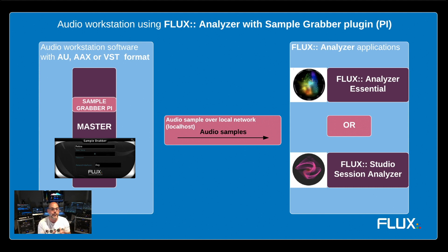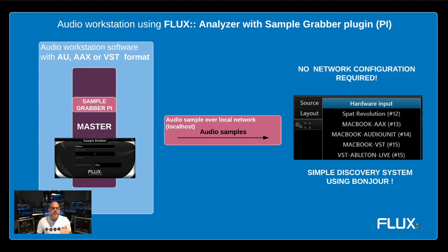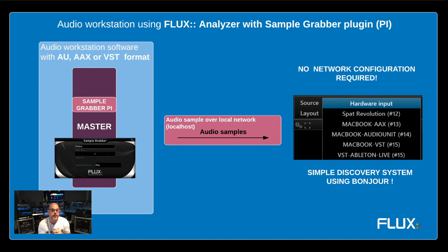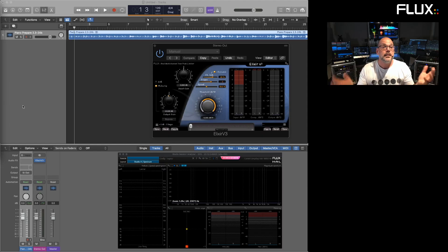The Sample Grabber can support 16 channels of audio. Note that the Studio Session Analyzer can only support two channels, while the analyzer system can have multi-channel capabilities. Simply pulling down the source button allows you to choose the Sample Grabber source instances on your network. Multiple instances can coexist, and this is done without any network configuration using a simple auto-discovery system based on Bonjour technology.